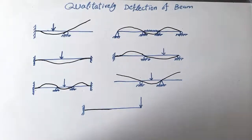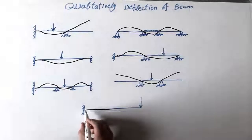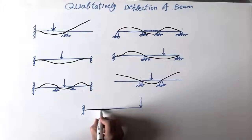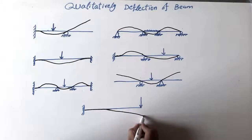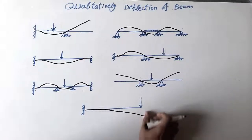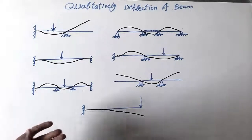Now we have a cantilever beam where one end is fixed and at the other end we have a point load acting downwards. The deflection shape will go slightly straight at the fixed end, then start to deflect, and it will end up deflected downward at the free end.